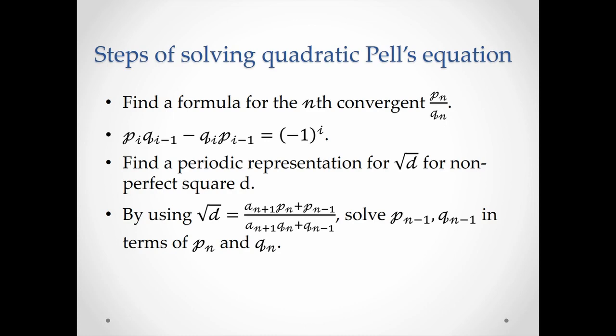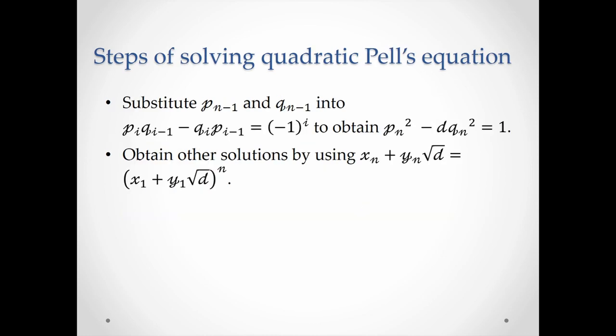Here is the outline of how people solve the quadratic Pell's equation. We have to first find a formula for the nth convergent, the properties of the convergents, as well as a periodic representation of the square root of d for a non-perfect-square d. By using these results, we can obtain the minimal solution to the quadratic Pell's equation. The remaining step is to obtain all the other solutions.